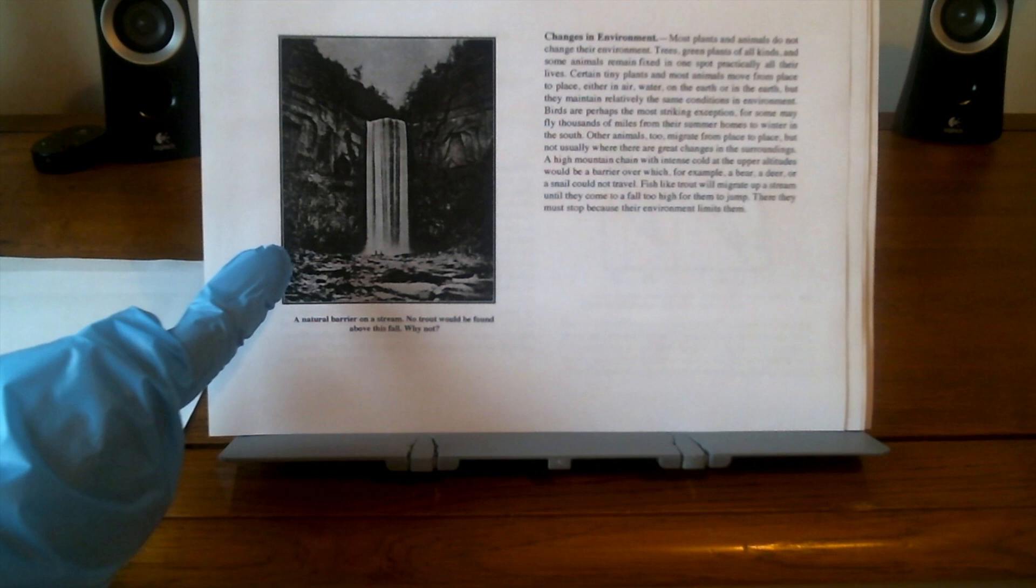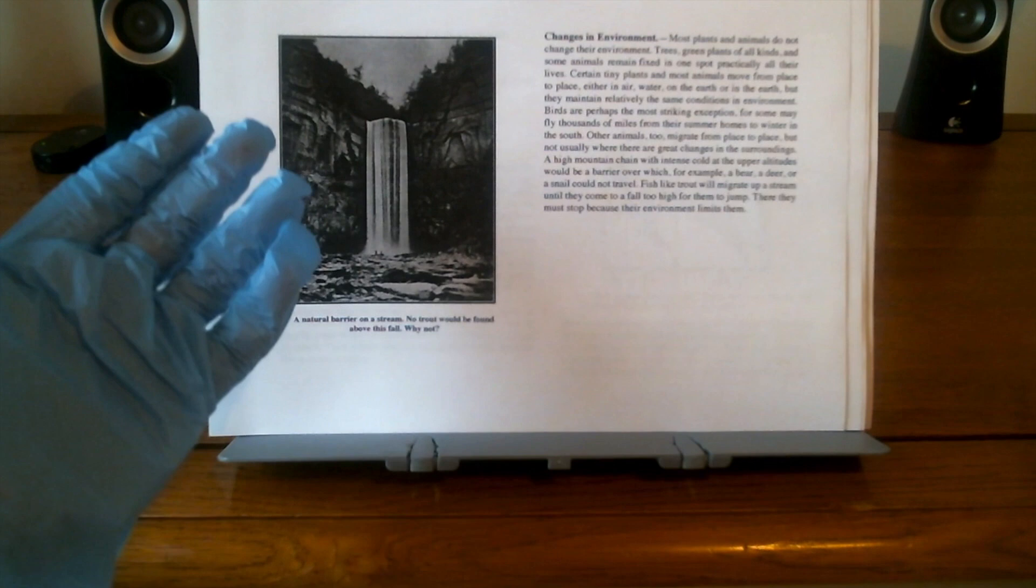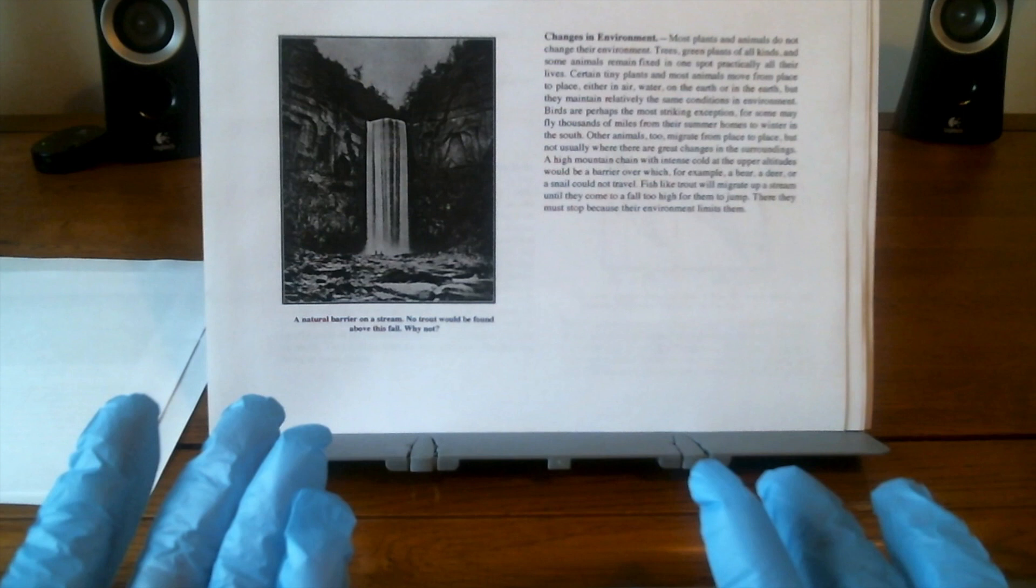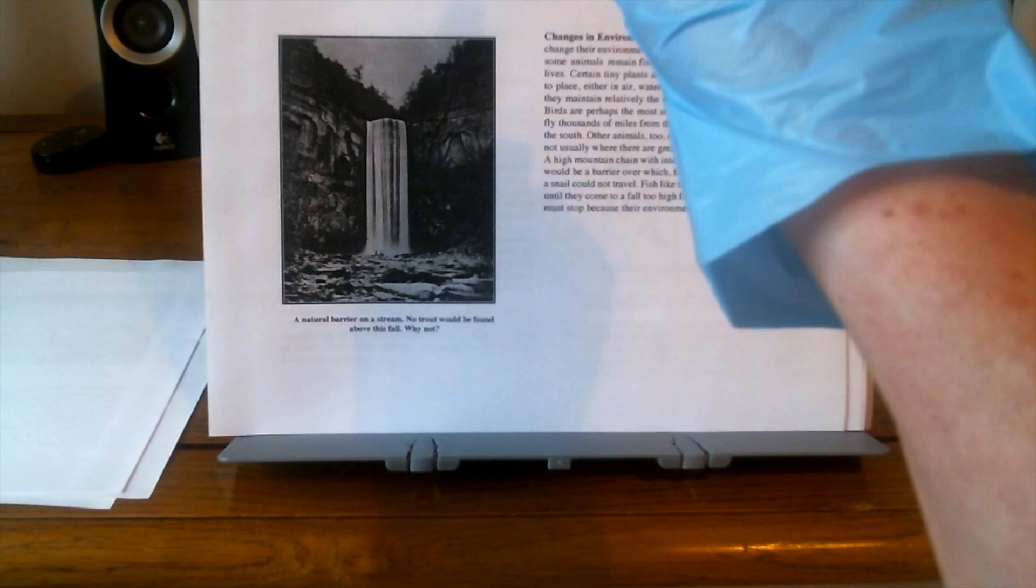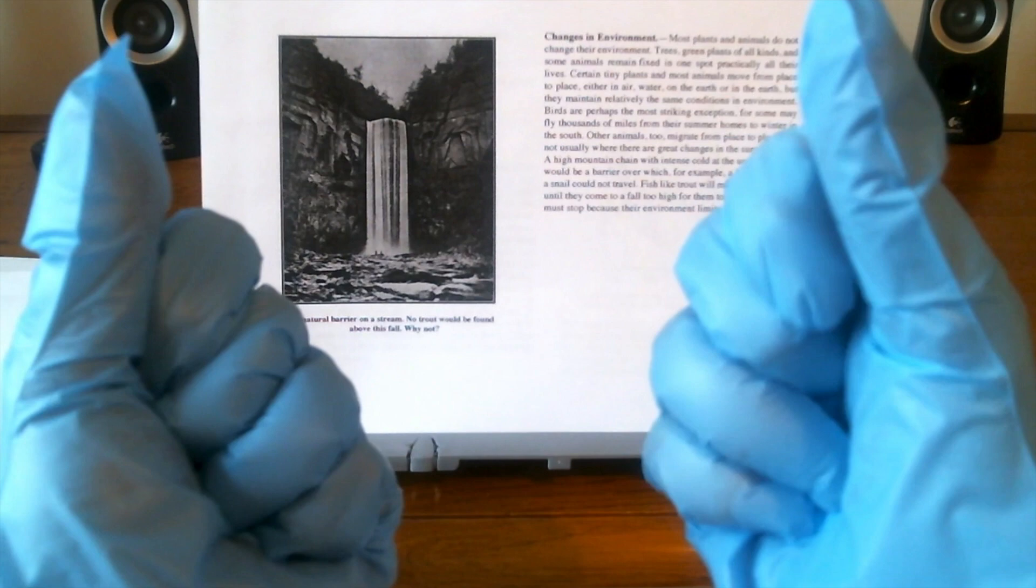Question for the group. Turn to your textbooks and note the illustration. A natural barrier here on a stream. Now, we would not find any trout on the top of the waterfall. Why is that? Good answer, Brooke. That is correct. They are not fit to live there.